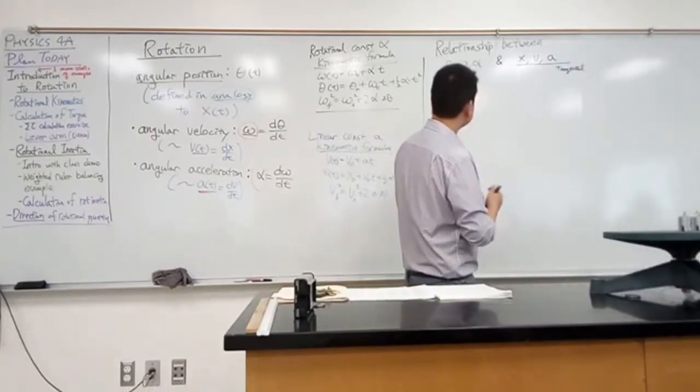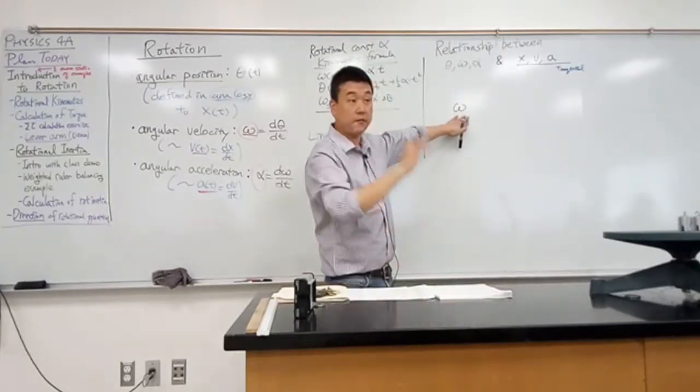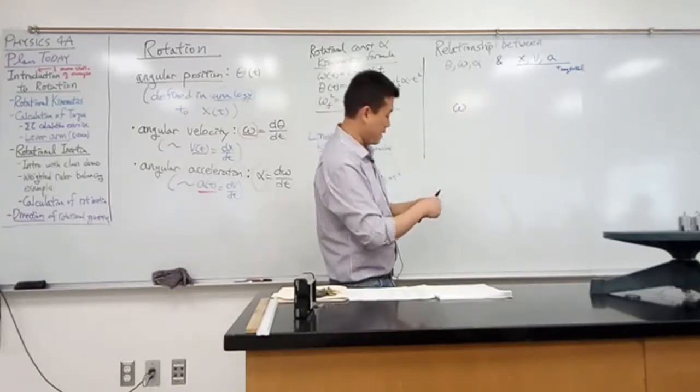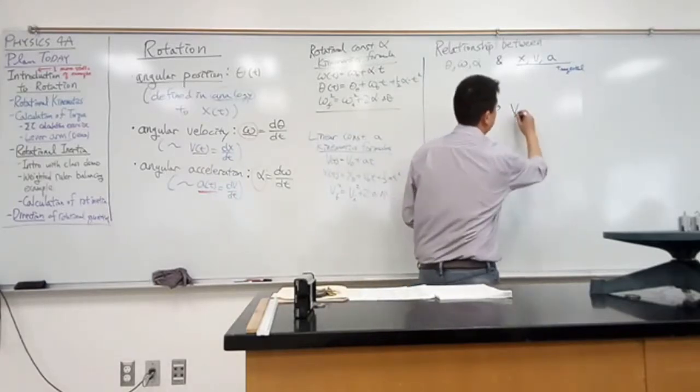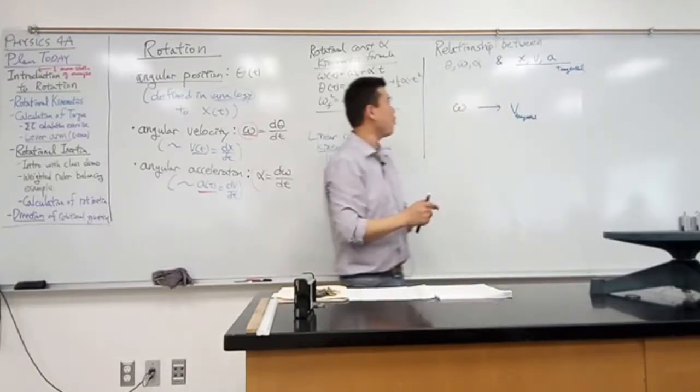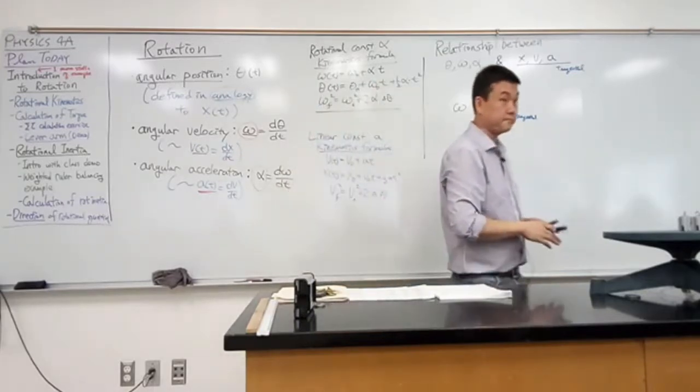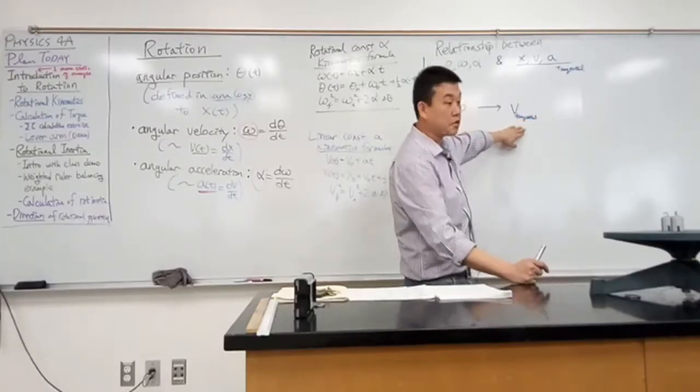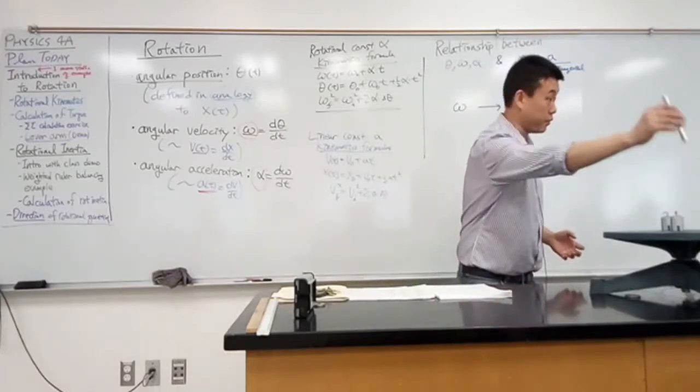I think that's the one that comes out most often, so maybe it's the most useful. Let's say I know angular velocity somehow - it's given to me, I calculated it, I measured it. From omega, I want to be able to calculate tangential velocity. What do I need? Is omega by itself sufficient, or do I need to know something else?